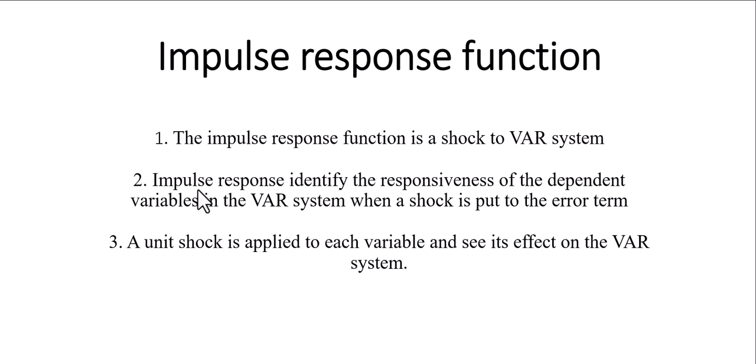A second explanation for the impulse response function is that it identifies the responsiveness of the dependent variable in the VAR system when a shock is put to the error term. In simple words, the impulse response function measures the change in the dependent variable when we give a shock to the error term. A third explanation is that a unit shock is applied to each variable and we observe its effects on the VAR system.